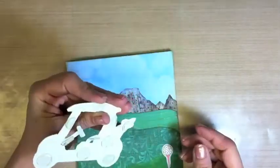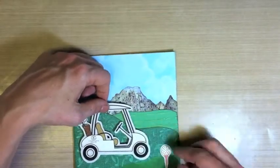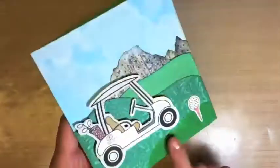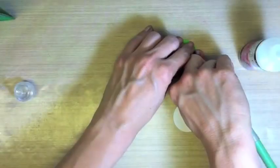Peel off the xyron backing and attach your golf ball and tee. Next up we'll use the Zotz 3D Glue Dots to adhere our golf cart to the front of our card. This little golf cart is so uber cute!